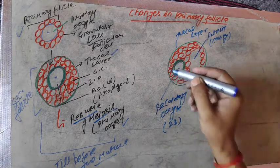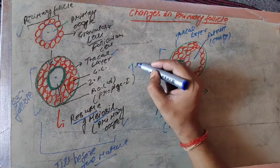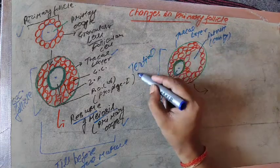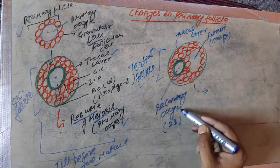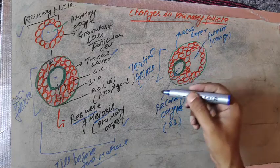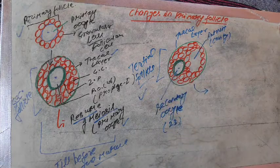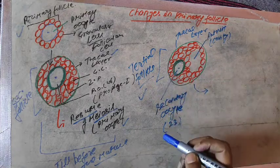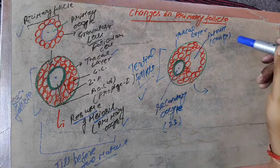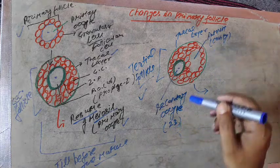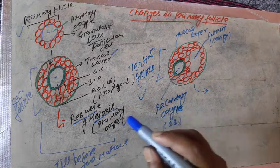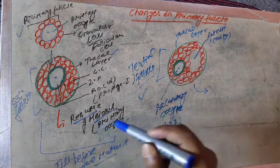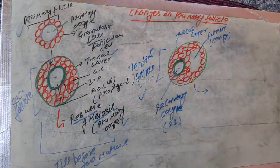At this stage, the structure is called a tertiary follicle. The characteristic features of tertiary follicles are the secondary oocytes along with the antrum cavity. The secondary oocytes form from the primary oocytes, and the primary oocytes form from the primordial cells.